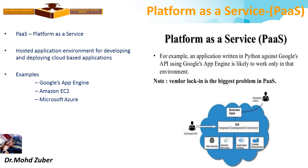Platform as a Service is a hosted application environment for developing and deploying cloud-based applications. Examples include Google App Engine, Amazon, and Microsoft Azure. An example: an application written in Python against the Google API using Google App Engine. This is Platform as a Service.